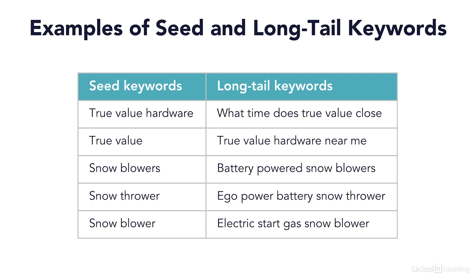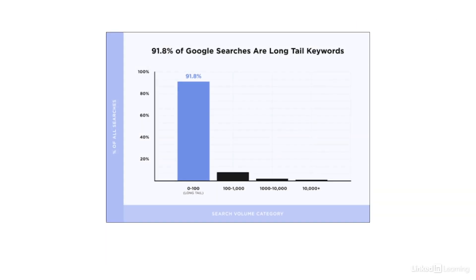So they are more likely doing research on buying a battery-powered snowblower. You would want to make sure to include that specific phrase on your webpage, because people searching using that keyword phrase are more likely to make a purchase. I recommend aiming for long tail keywords because you will get visitors that are more targeted and ready to buy what you have to offer.